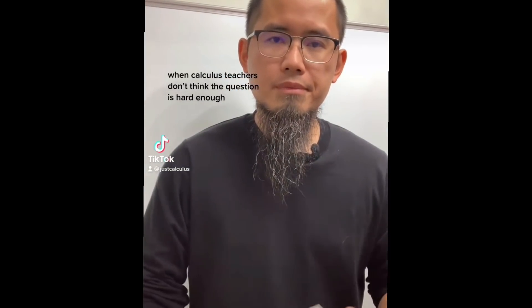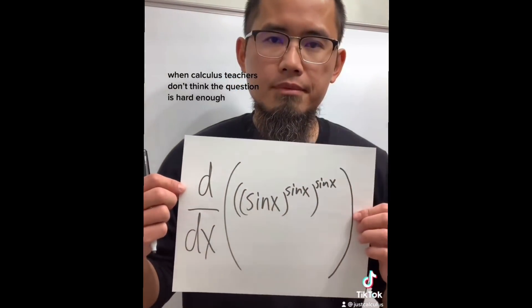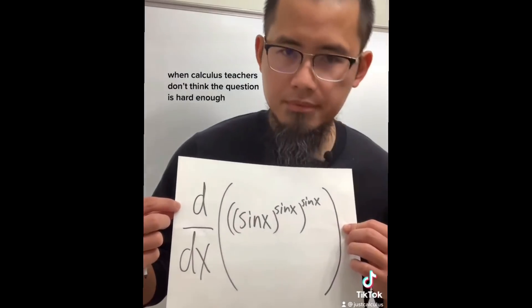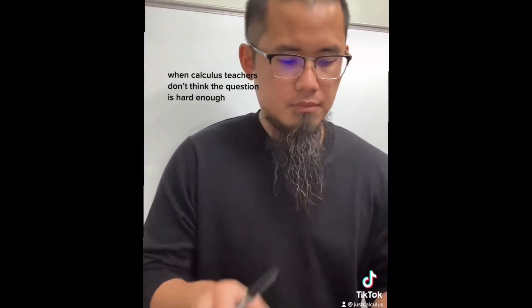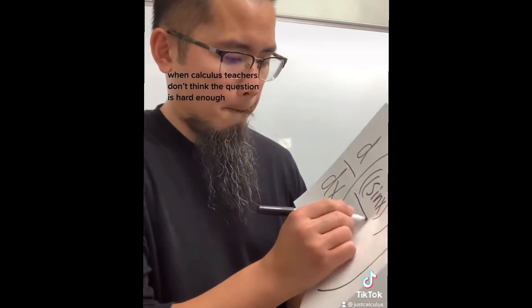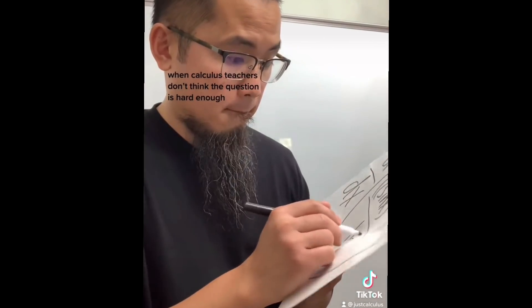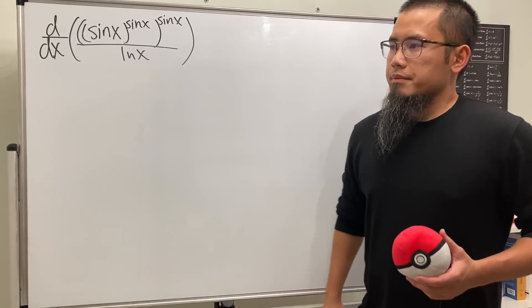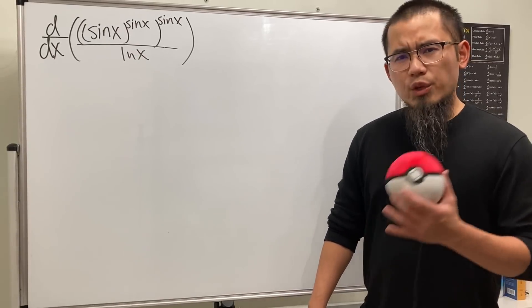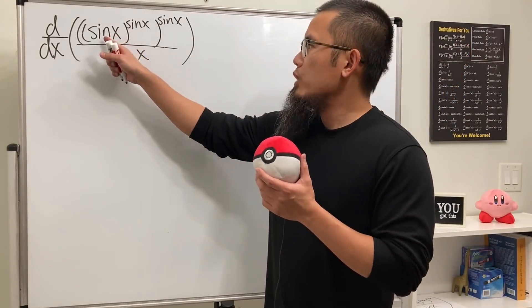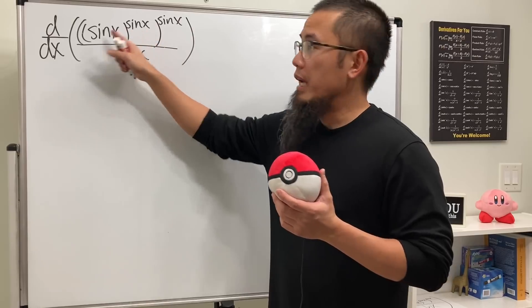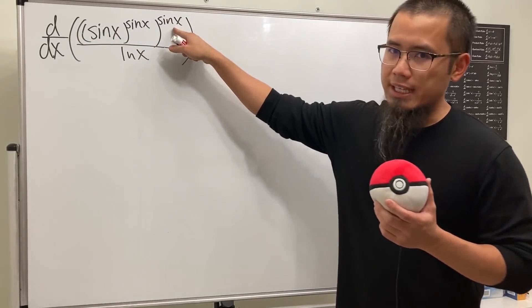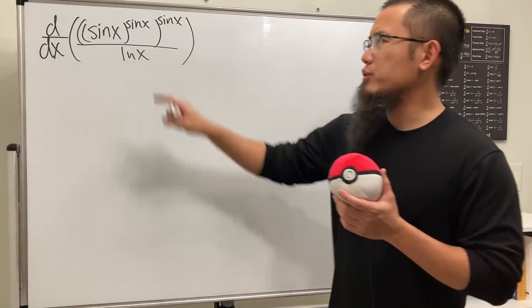When calculus teachers don't think the question is hard enough. Here's the solution — look at this: we have sin(x) raised to a sin(x) power in parentheses, and then that whole thing raised to another sin(x) power. In fact, we can just multiply these two powers together.